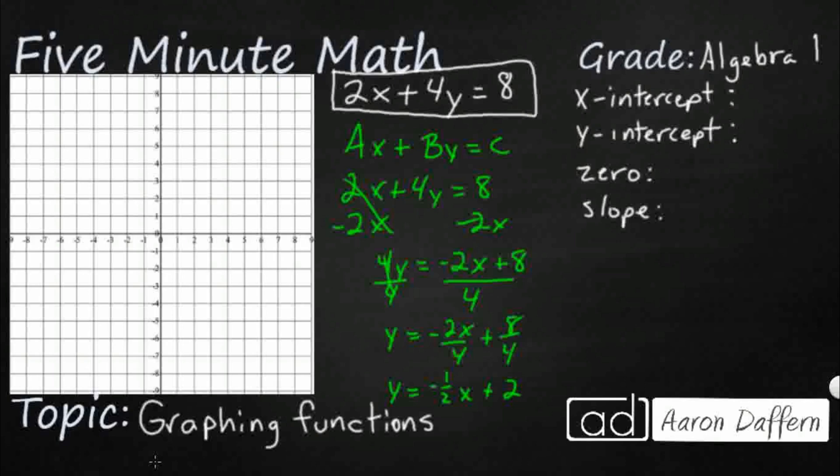So now I know several things about this. I know my slope is negative 1 half because it's in that m position. I know my y-intercept is going to be x of 0, y of 2. So I can go ahead and mark that right there.